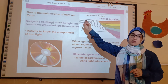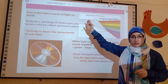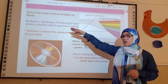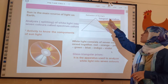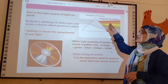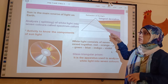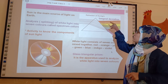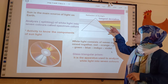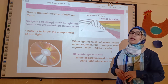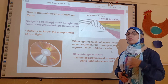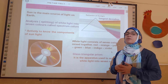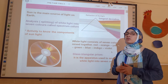So, the white light, which is the light of the sun — and the sun is the main source of light on Earth — consists of seven spectral colors, which are red, orange, yellow, green, blue, indigo, and violet.